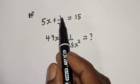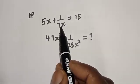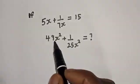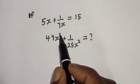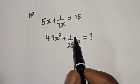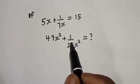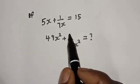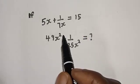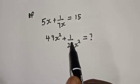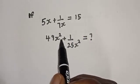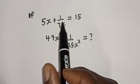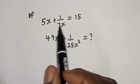If 5s plus 1 over 7s is equal to 15, what is the value of 49s squared plus 1 over 25s squared? Hi everyone, welcome to my class. In this class, we want to find the value of 49s squared plus 1 over 25s squared from this equation.